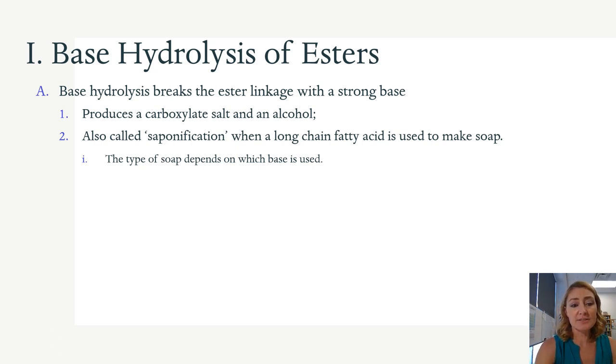This reaction is also called saponification. If you use a long chain fatty acid or a long chain carboxylic acid, this is what we would use to make soap. The type of soap that you form depends on the base that's used. So if we use potassium hydroxide as our strong base, you're going to wind up with liquid soap. And if you use sodium hydroxide as your base, you'll wind up with a solid soap.